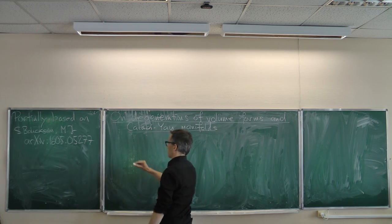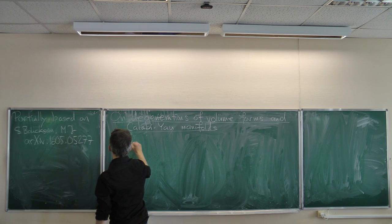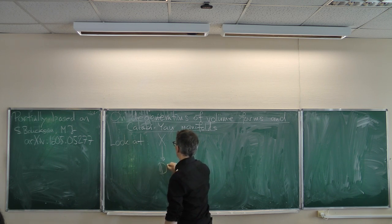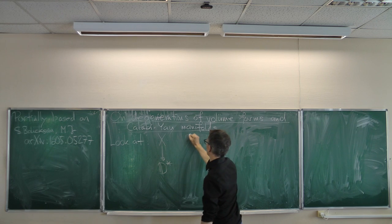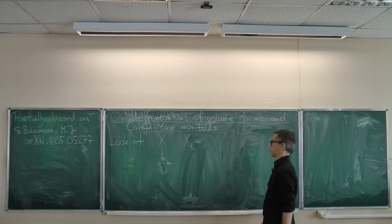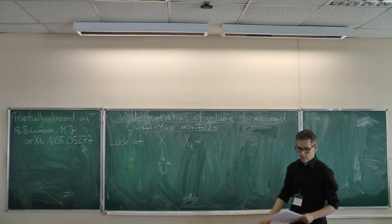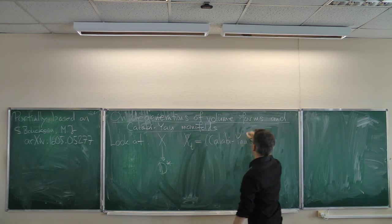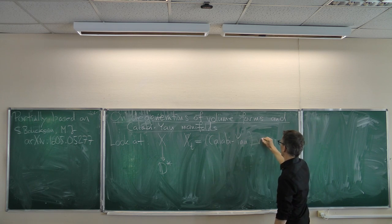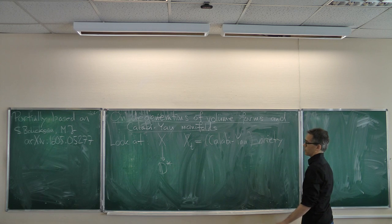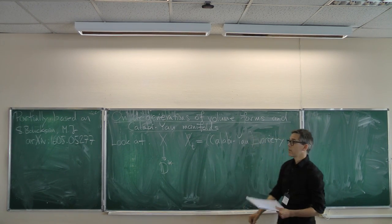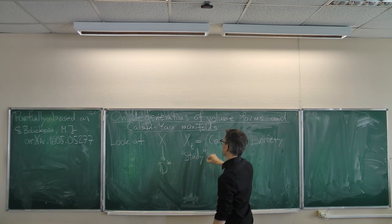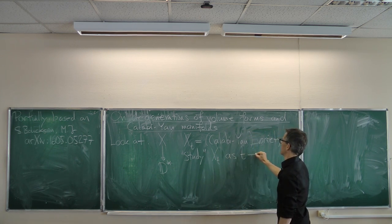Let me just say very vaguely what I want to look at. I want to have a degeneration — a one complex parameter family of some kind of variety. We'll mainly look at the case of a Calabi-Yau variety. Of course, this could be a constant family and then there's not so much to say. So somehow you want to study what happens to X_t as t tends to 0.